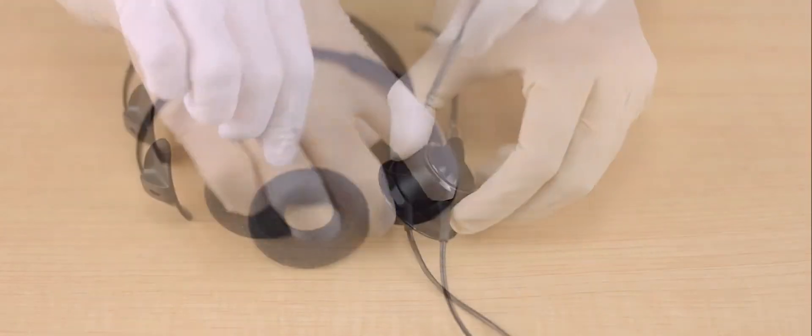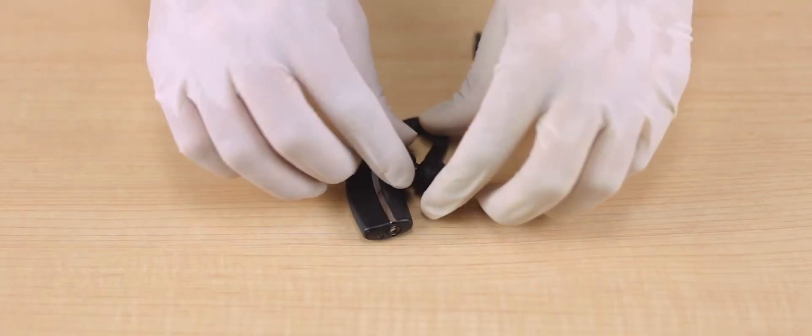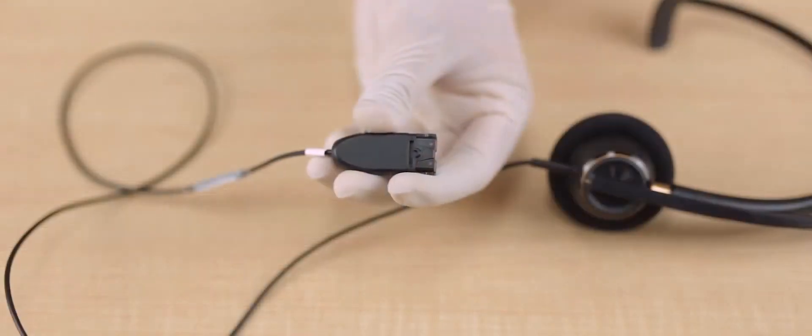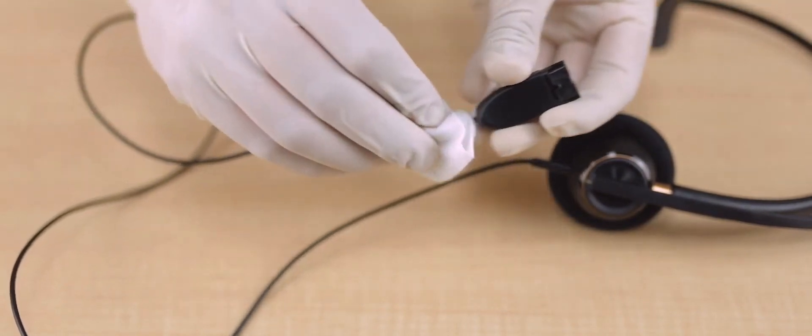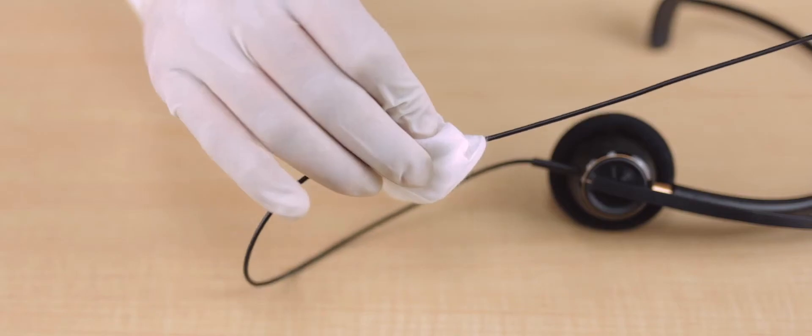Remove any detachable components. To clean the headset, hold the quick disconnect plug, wrap it with the disinfecting wipe, and move towards the union of the cable and the headset. Once you have reached that point, continue cleaning the headset.